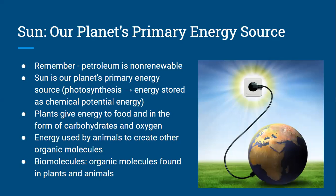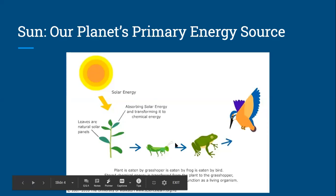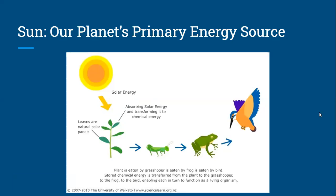Biomolecules include all of these organic molecules found in both plants and animals. This diagram explains that: the solar energy from the sun is absorbed by plants and transferred to chemical energy — the leaves act as natural solar panels. Then that plant is eaten by a grasshopper, which is eaten by a frog, and then eaten by a bird. So this stored chemical energy is transferred from the plant to the grasshopper, to the frog, and then to the bird, enabling each in turn to function as a living organism.